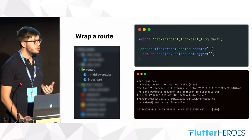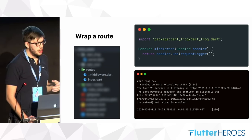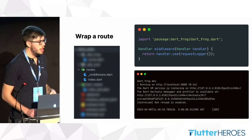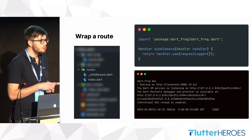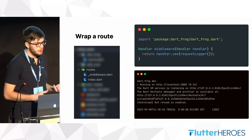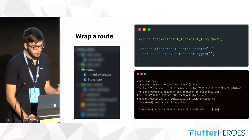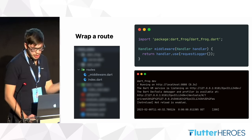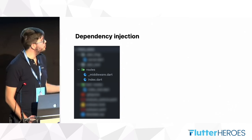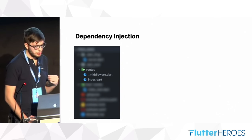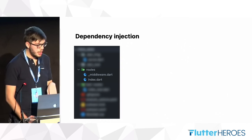A typical use case for middleware is checking the authorization header — you've wrapped your router and need to know who the user is. Or you use it after the handler to add or remove headers. Middleware is also useful for dependency injection, allowing you to inject data or class instances into the handler.